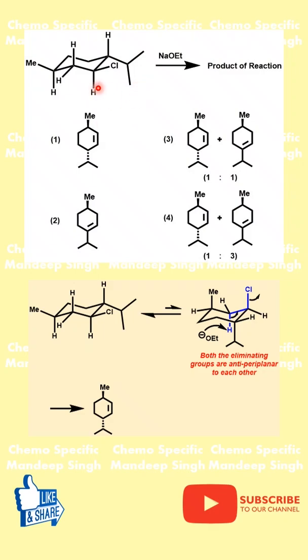Let's review this particular problem which is based on the concept of E2 elimination. Here we have this cyclohexyl chloride compound which is undergoing reaction with sodium ethoxide. One of the primary conditions for E2 elimination is that both the eliminating groups must be anti-periplanar to each other.